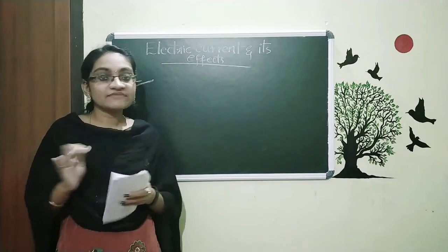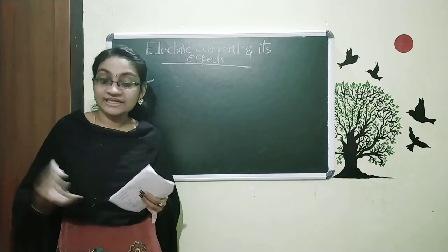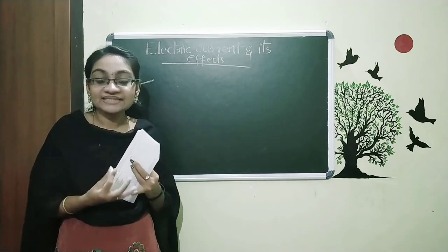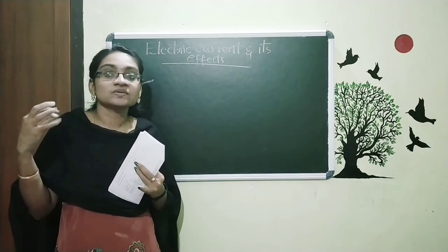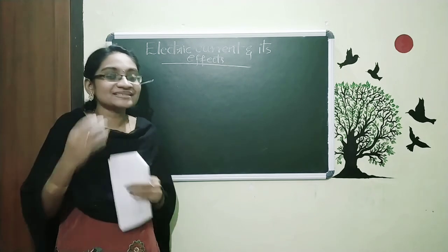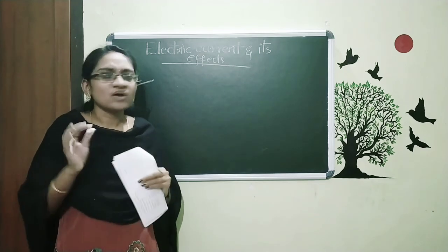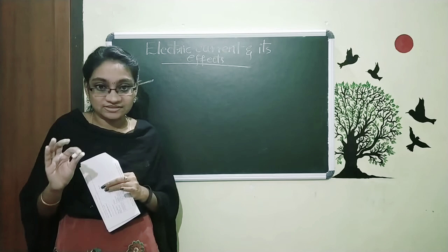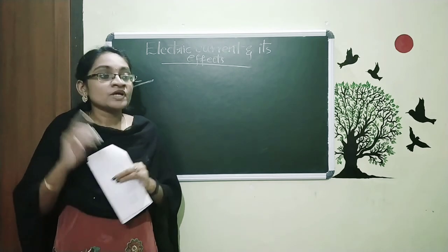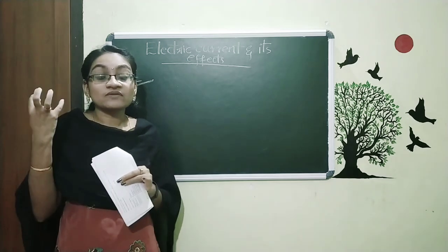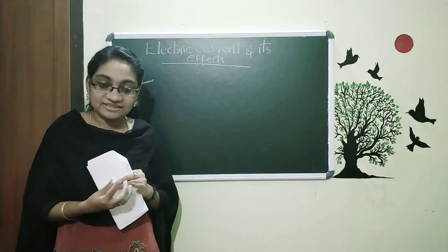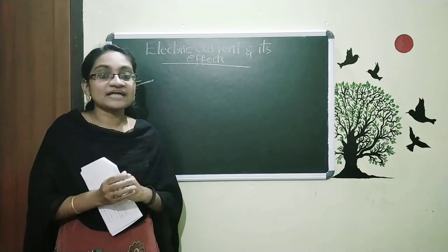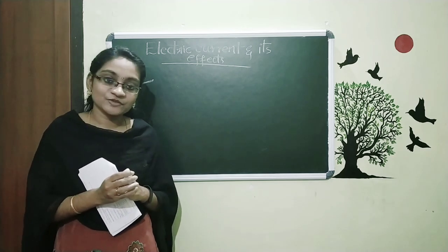It is enough for today. Today we discussed the heating effects of electric current. We studied different equipment using heat as an advantage, and also how in certain devices it can be a disadvantage — the continuous heat production can damage electronic devices. The fuse is also one application we will discuss in our next class. Please read your textbook three to four times, and we will meet in the next class. Thank you.